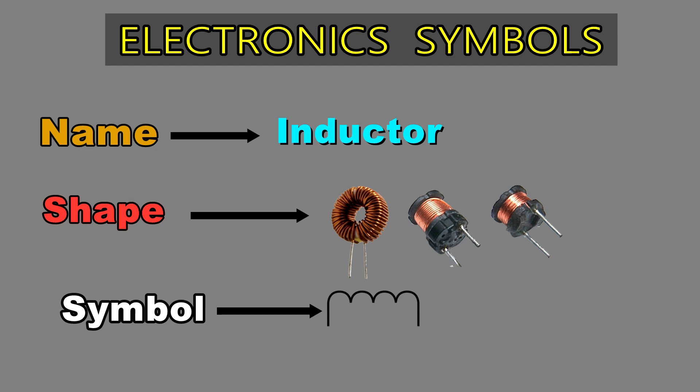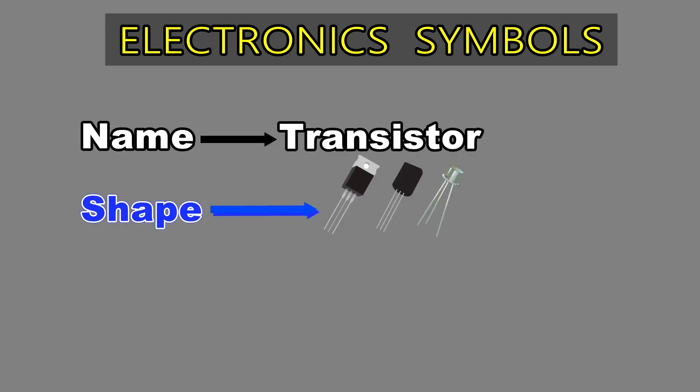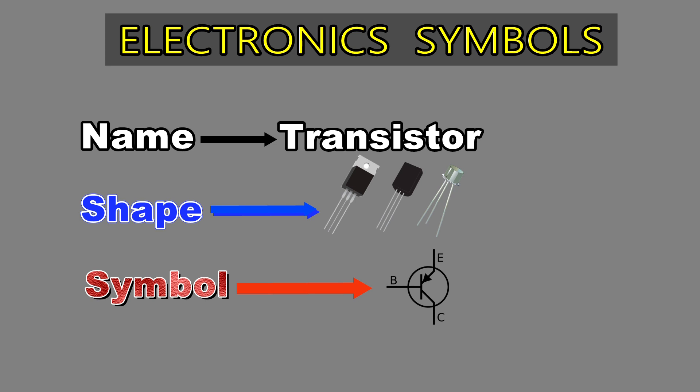An inductor, also called a coil, choke, or reactor, is a passive two-terminal electrical component that stores energy in a magnetic field when electric current flows through it. A transistor is a device that regulates current or voltage flow and acts as a switch or gate for electronic signals.